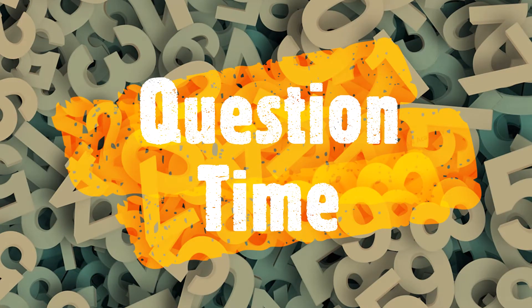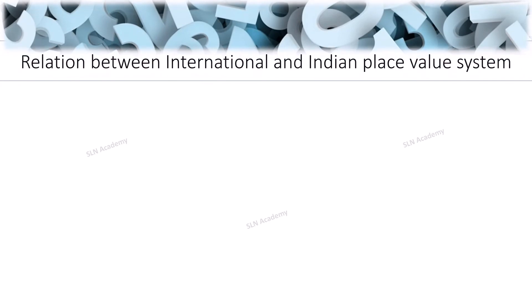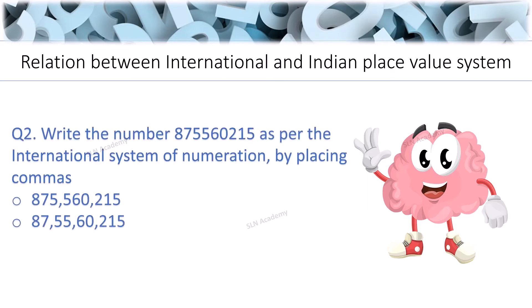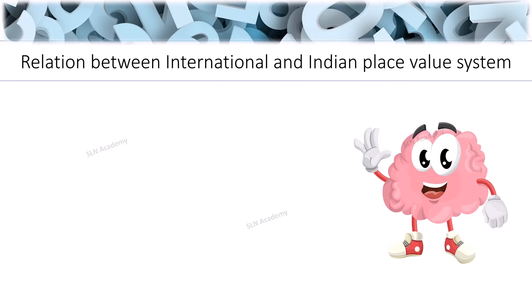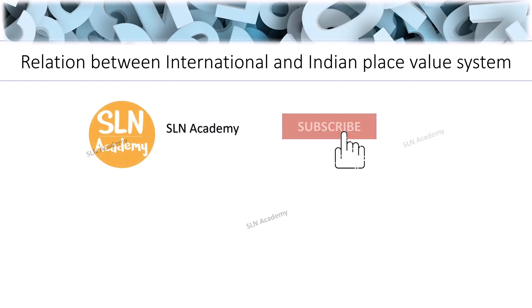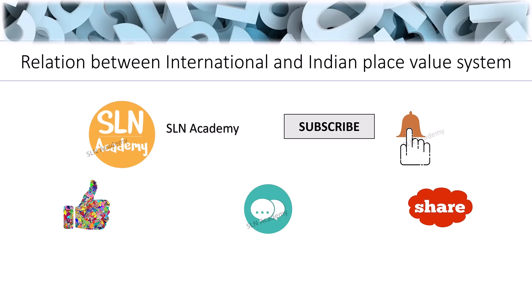Now it's question time. Question 1: Write the number 875,560,215 as per the Indian system of numeration by placing commas. Question 2: Write the number 875,560,215 as per the international system of numeration by placing commas. Question 3: Write the standard form of the number 9 crores in figures. Write your answers in the comment section below and hit the like and subscribe button if you haven't yet.